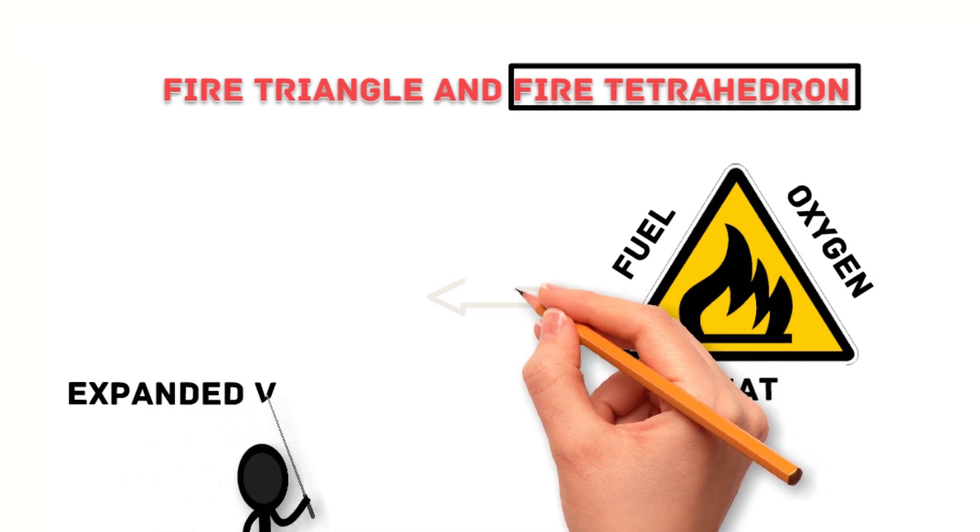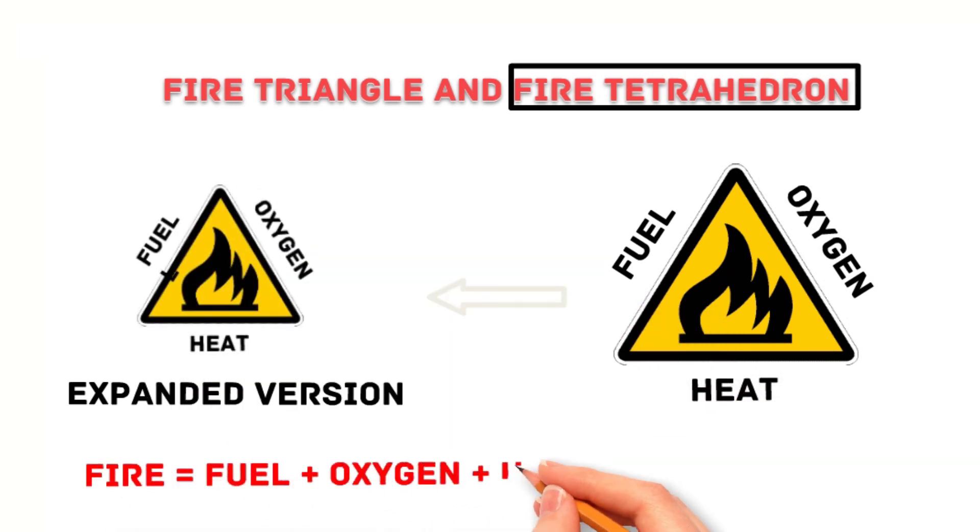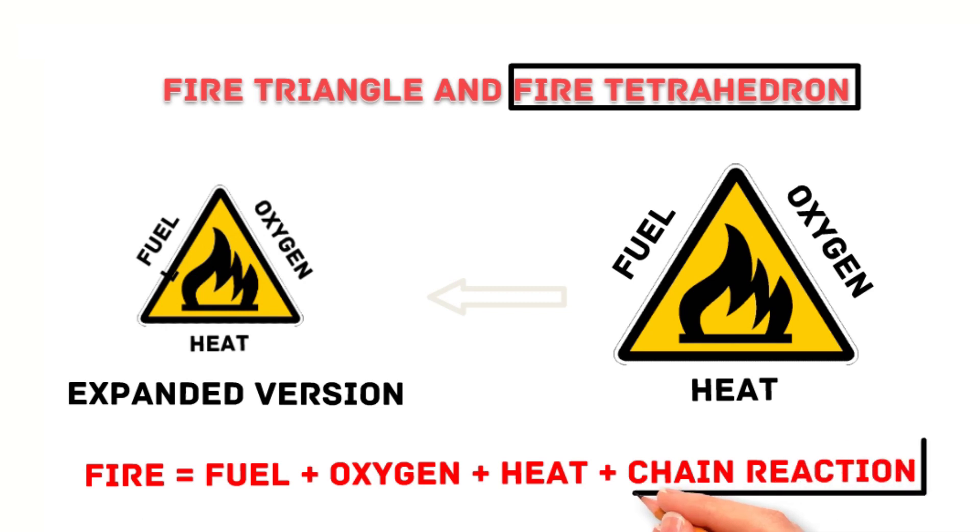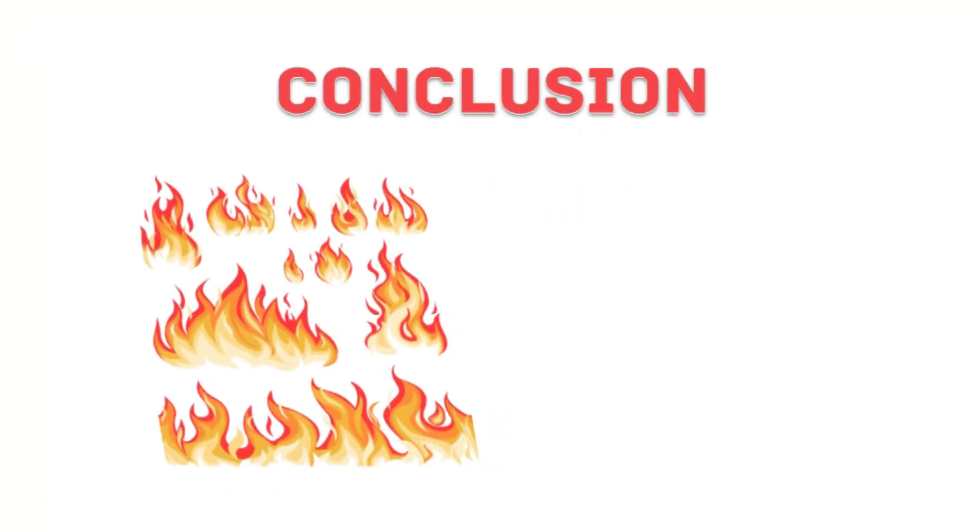The fire tetrahedron is an expanded version of the fire triangle. It includes a fourth element, which is the chemical chain reaction. The chemical chain reaction is the process that keeps the fire going once it has been ignited.